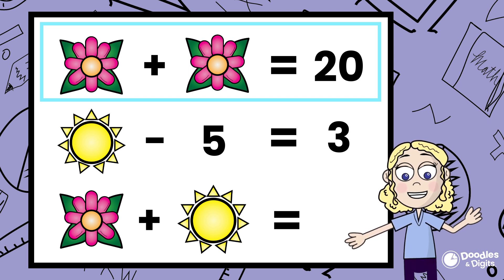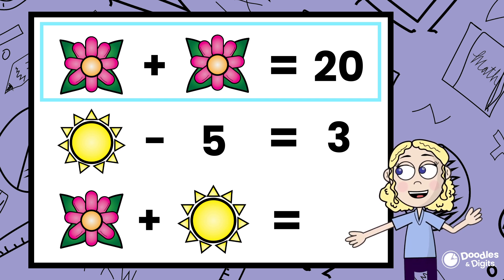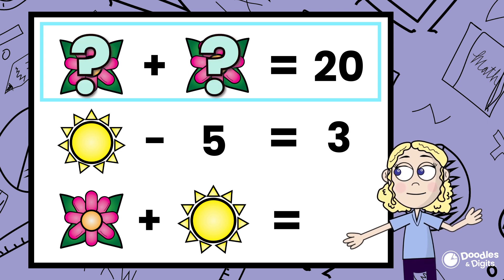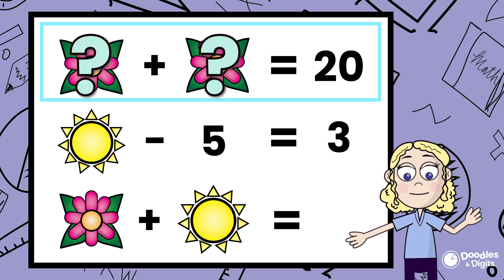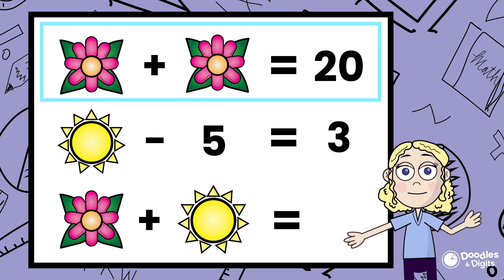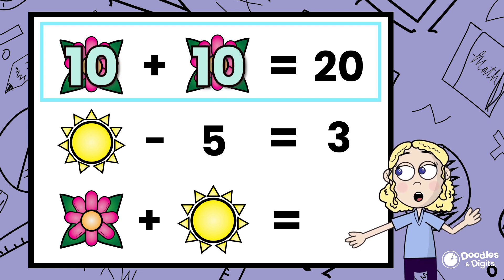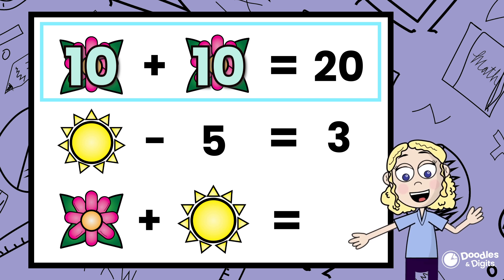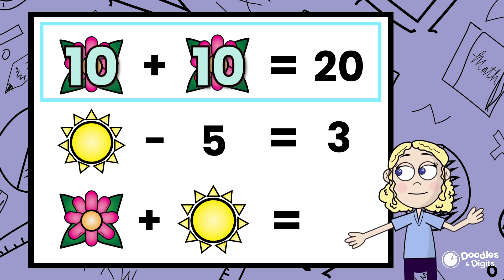I'll think to myself, hmm, I have two flowers that are going to represent the same number that equal 20. What plus what — that's the same number — will equal 20? 10! That's right. So the flower is actually 10. 10 plus 10 equals 20.